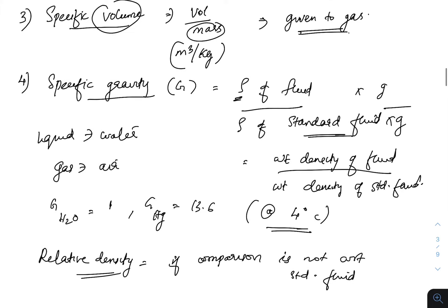The next one is specific gravity: density of fluid divided by density of standard fluid. Multiplying ρg on both sides, it can also be expressed as weight density of fluid by weight density of standard fluid. For liquids, the standard fluid is water; for gases, it is air. Specific gravity of water at 4°C is 1 and that of mercury at 4°C is 13.6. Relative density is the comparison between densities of any two fluids — the denominator need not be a standard fluid.